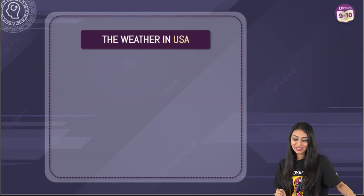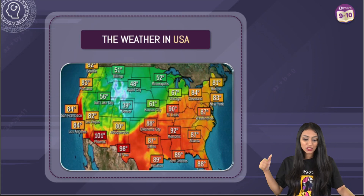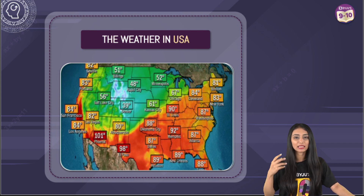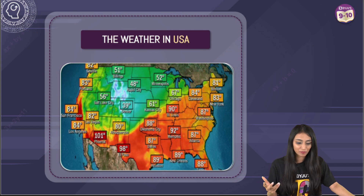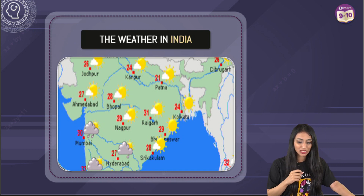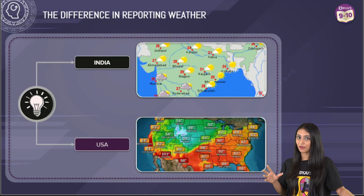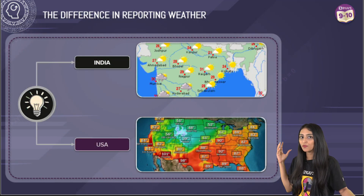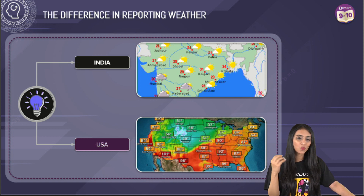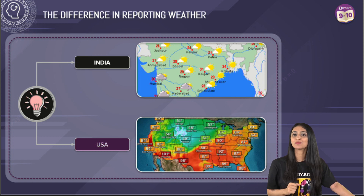Here you can see the weather report of USA — just look at the numbers. The temperature is 61 degrees, 84 degrees, 101 degrees, 92 degrees — the numbers are really big. Now take a look at the weather of India. The numbers are really small: 27 degrees, 28 degrees, 29 degrees and so on. If you try to compare the weather of both places, it seems like the USA is way hotter than India. But in reality, it's just the opposite. So how is that possible?